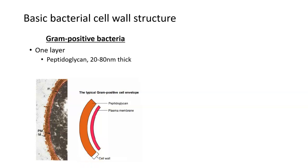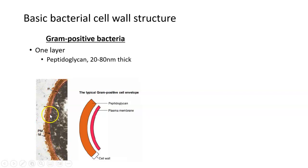There's one single very thick layer of peptidoglycan. We talked in the previous lecture about that peptidoglycan structure and how it's made. In gram positive bacteria there are many many strands of peptidoglycan all held together to make this one very thick layer. You can actually see it in the microscope image as well — the plasma membrane highlighted in pink and that thick single layer of peptidoglycan outside of it.